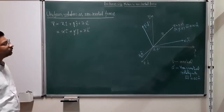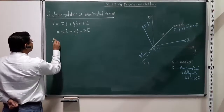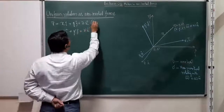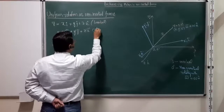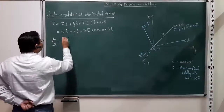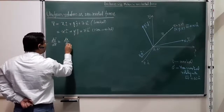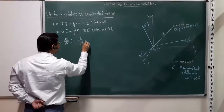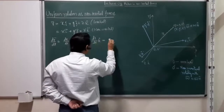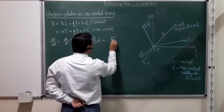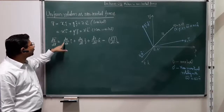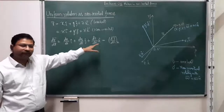Let us compute dr/dt. In the inertial frame, since î, ĵ, k̂ are constant, dr/dt = (dx/dt)î + (dy/dt)ĵ + (dz/dt)k̂. This is nothing but (dr/dt)_inertial. I call this inertial because it is just the time derivative of the components — the unit vectors are constant.